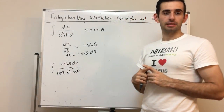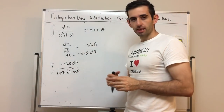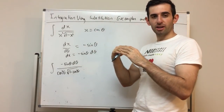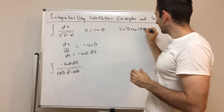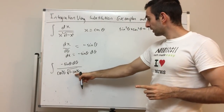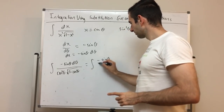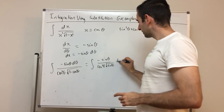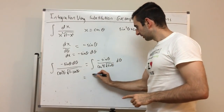Substituting in: cos²θ · √(1 − cos²θ) · (−sin θ dθ). This is where trig knowledge helps. Using the Pythagorean identity — cos²θ + sin²θ = 1 — we know that 1 − cos²θ = sin²θ. So √(1 − cos²θ) = sin θ, and the square root disappears.